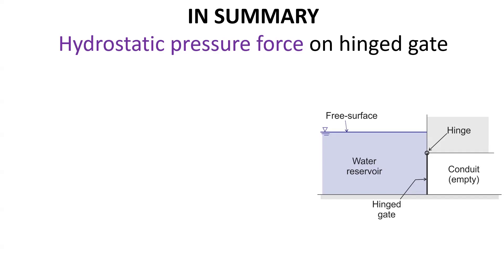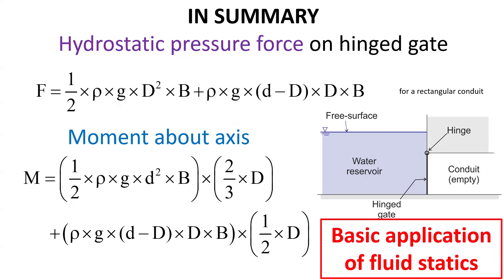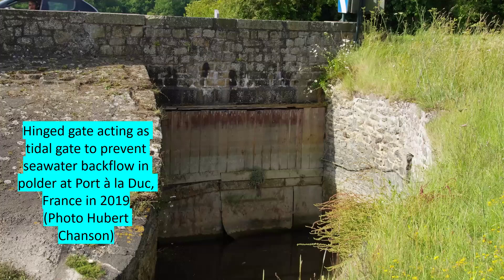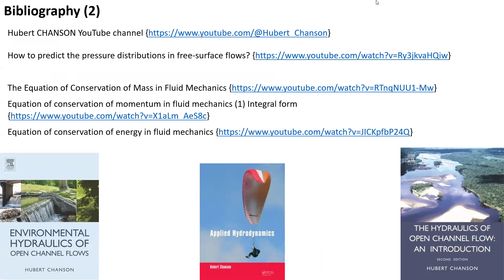In summary, the hydrostatic pressure force on a hinged gate in a rectangular conduit initially empty can be derived analytically, as well as the moment about the axis. Both derivations are basic applications of fluid statics, with an example of a hinged gate shown here. Relevant bibliography includes a number of textbooks and relevant YouTube videos in this channel.